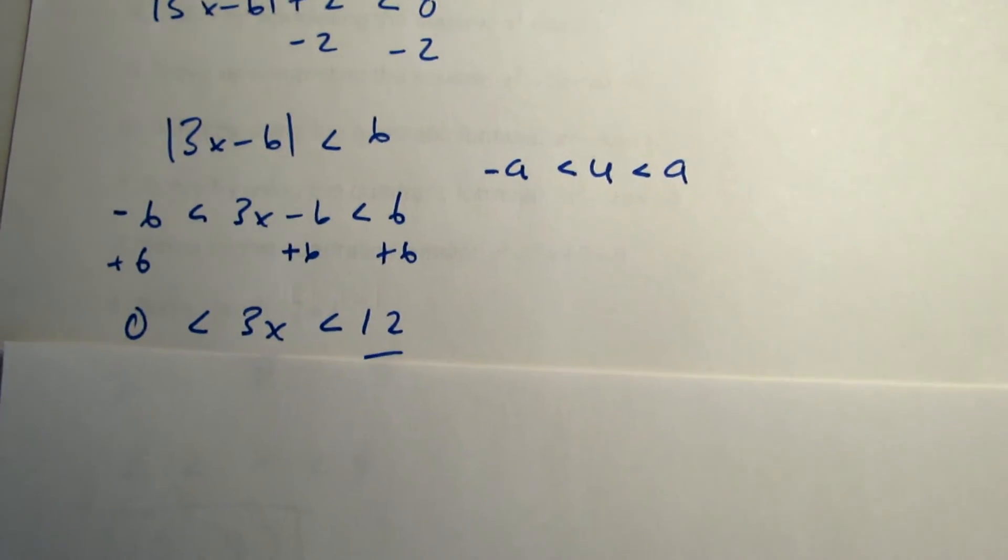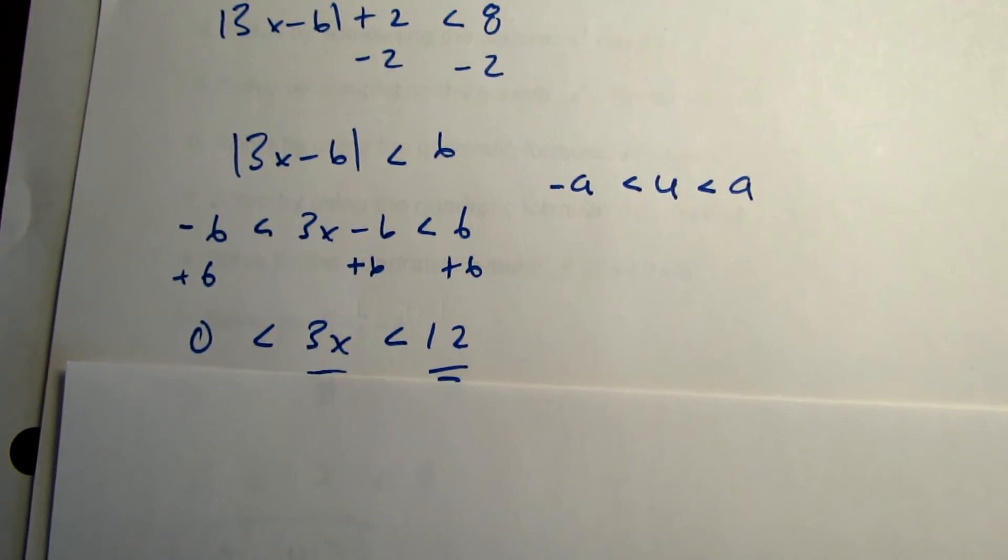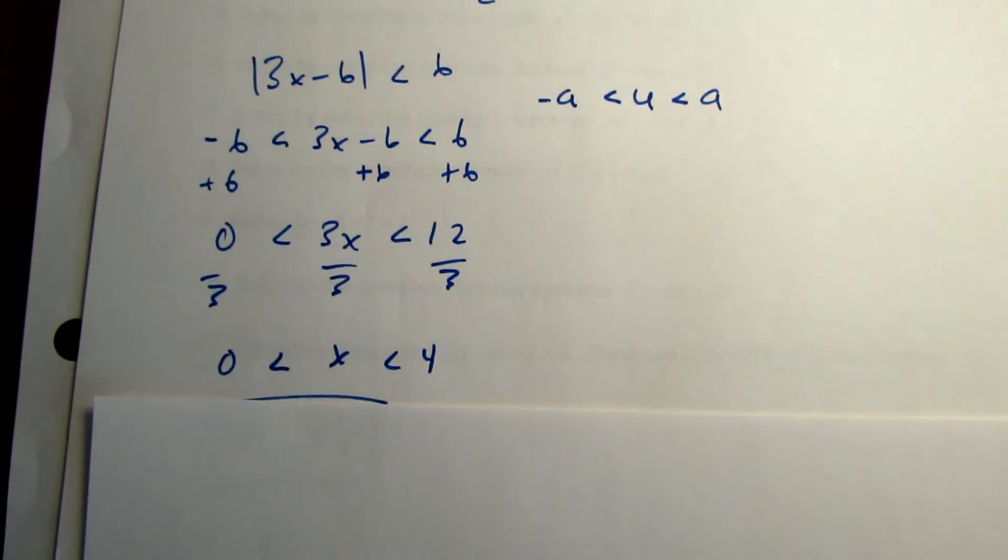Then you want to isolate x and divide each part by 3, and you should get 0 less than x less than 4.